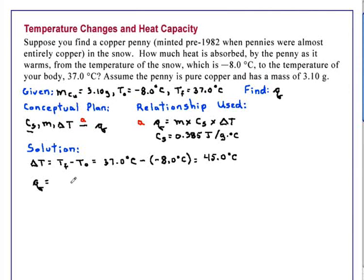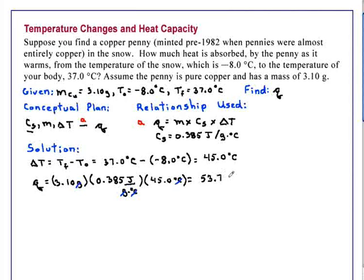Q, the heat absorbed, then is the quantity of copper, 3.10 gram, times the heat capacity, 0.385 joules per gram degrees C. So the grams cancel. And then times the temperature change of 45.0 degrees C. The degrees C cancel, and we get an answer of 53.7 joules.